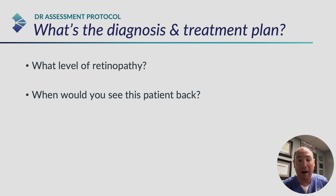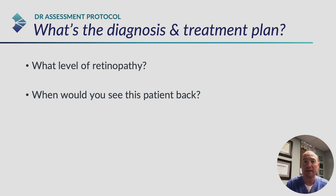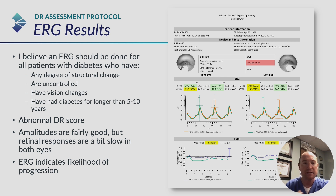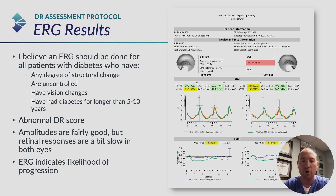We know the level of retinopathy — this is mild NPDR. When would you see this patient back with a normal OCT and very mild NPDR? The answer for most of us would be see you back in a year. But when you add in additional data — the ERG results — this is the RET EVAL handheld ERG. It's an amazingly powerful device with many protocols. The number one protocol we use is the DR assessment, what I call the DR protocol, and it gives you a DR score — a diabetic retinopathy score.